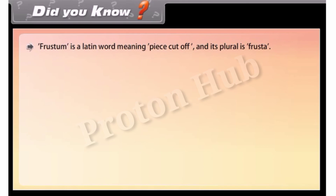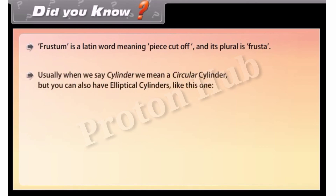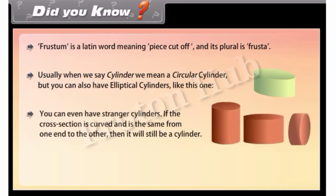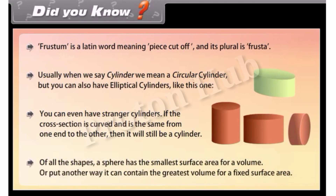Did you know? Frustum is a Latin word meaning 'piece cut off,' and its plural is frusta. Usually when we say cylinder, we mean a circular cylinder, but you can also have elliptical cylinders. If the cross-section is curved and is the same from one end to the other, it is still a cylinder. Of all shapes, a sphere has the smallest surface area for a given volume — or put another way, it can contain the greatest volume for a fixed surface area.